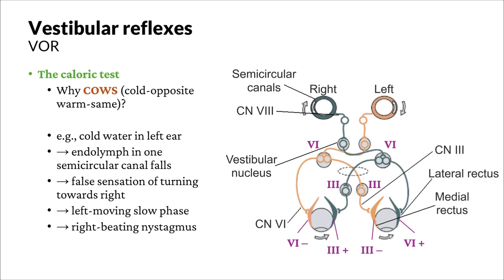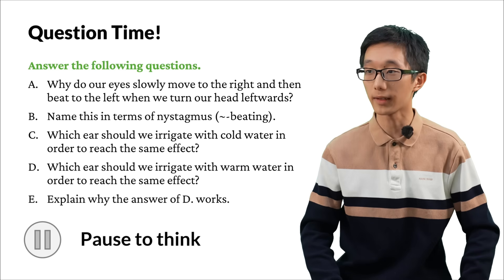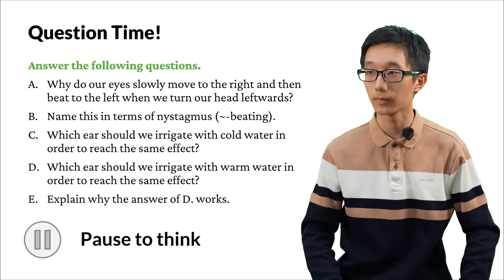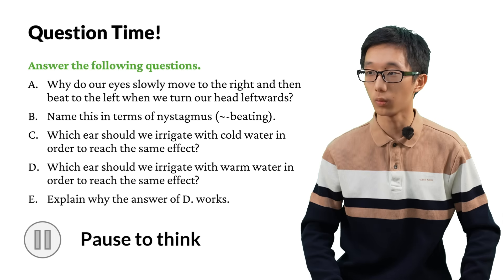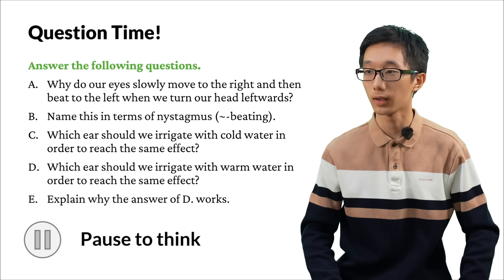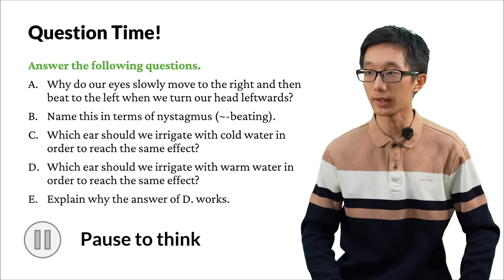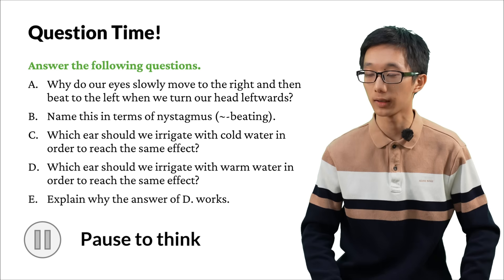That is how the caloric test works. We can use this test to examine whether the vestibular organs and the brainstem pathways are functioning normally. Now it's time to review. Please answer the following questions: Why do our eyes slowly move to the right and then beat to the left when we turn our head leftwards? If this is the direction of a nystagmus, please name it — what direction is it beating? Which ear should we irrigate with cold water to reach the same effect, and which ear with warm water? Please explain why the warm water answer works.